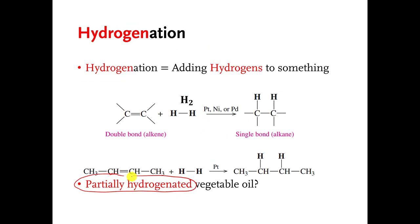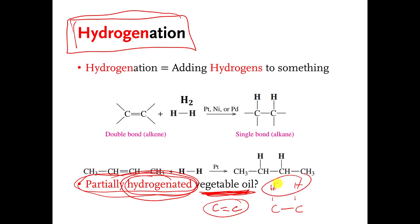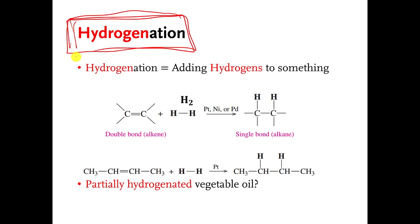If you have ever heard of partially hydrogenated vegetable oil, the word 'hydrogenated' here means the same thing as hydrogenation. Vegetable oil must have some carbon-carbon double bonds, and if they partially hydrogenate the vegetable oil, that means they convert some of those carbon-carbon double bonds into single bonds and end up adding hydrogens — but they only do it partially, to some of the double bonds. I think it makes it last longer, maybe taste a little better. That's where that word comes from.